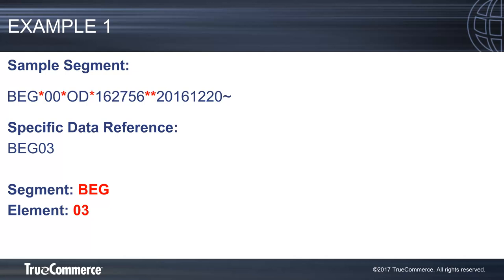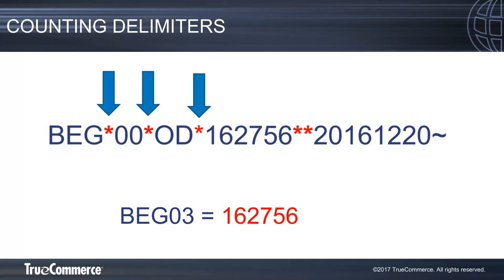If we want to know about a piece of information being sent in an EDI segment, we would need to reference the segment and element specifically. In this example, we want to know what value is being sent in the BEG03 position. BEG is referring to the EDI segment, and 03 is referring to the specific element. To determine which value is being sent in the BEG03 position, we need to count three delimiters. Here we can see that the third element is 162756.